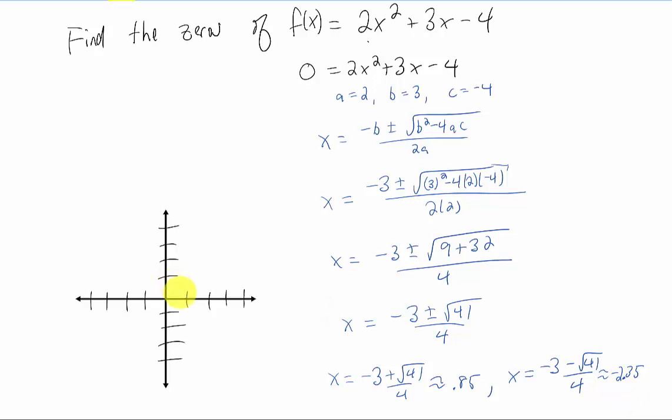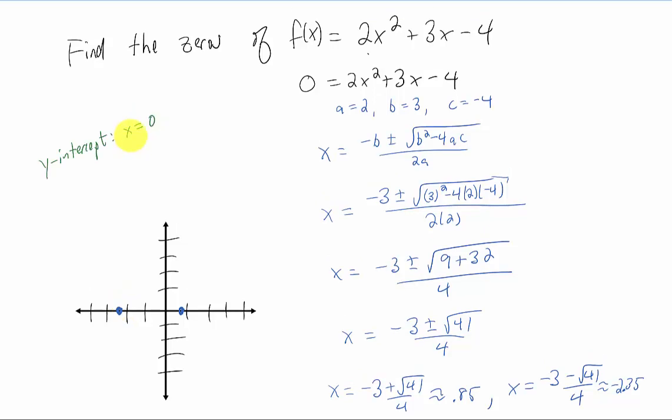If we wanted to make a little graph of this, 0.85 is a little bit less than one. Negative 2.35 is in between negative two and negative three. Finding a y-intercept is usually very easy, so I'll plug in x equals zero, and we get f of zero equals negative four. So we have a point down here at zero negative four. And a basic sketch of our parabola will look something like this.